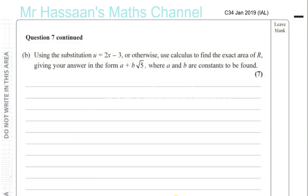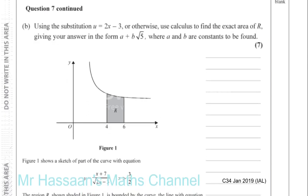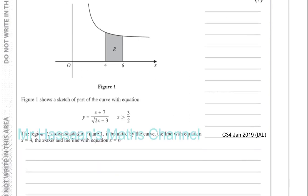Question number 7B from C34, January 2019 International A-Level Paper. It says: using the substitution U equals 2x minus 3, or otherwise, use calculus to find the exact area of R, giving an answer in the form A plus B root 5, where A and B are constants to be found. That's from the question on the previous page, which I've got a picture of here.